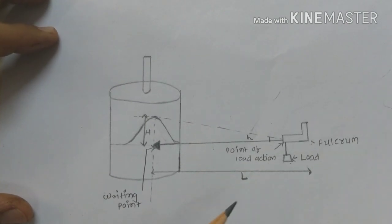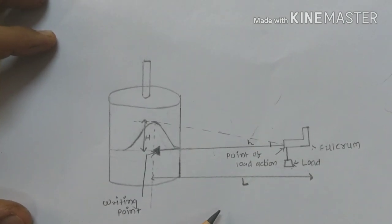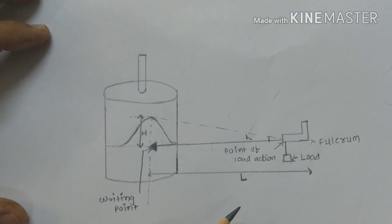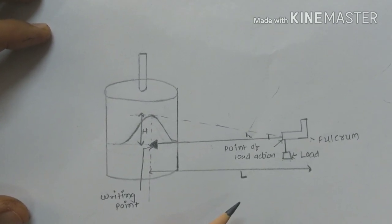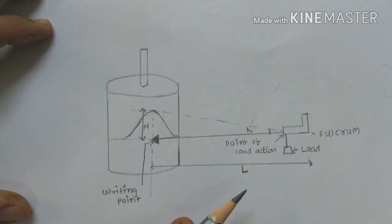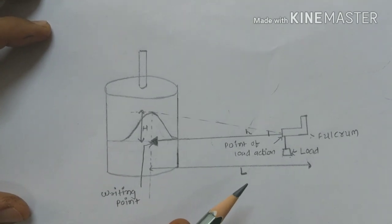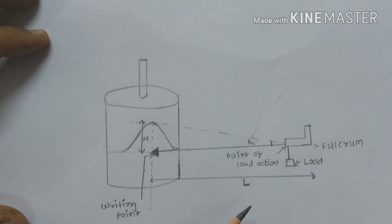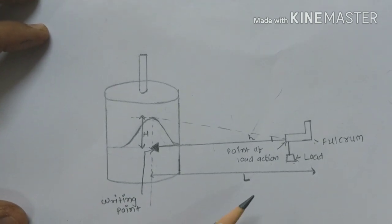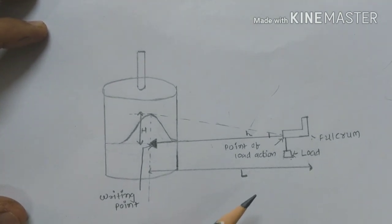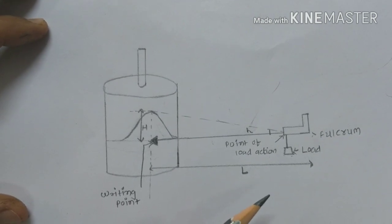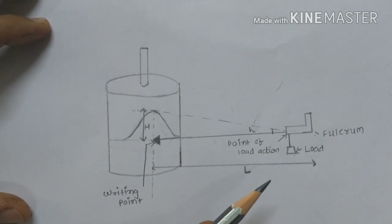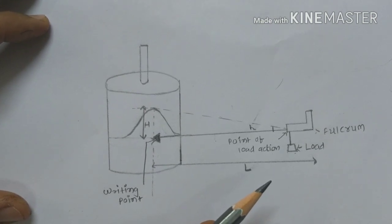Arrange the instruments the same as in simple muscle curve. First hang 10 grams of weight from the lever, 1 cm from the fulcrum. Then, without changing the strength of stimulus and point of stimulus, record the simple muscle curve adding 10 grams of weight every time.